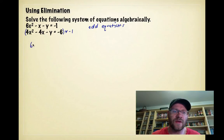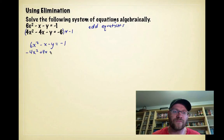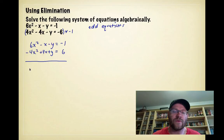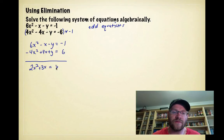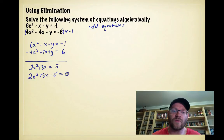The first equation stays as 6x² − x − y = −1. The second equation becomes −4x² + 4x + y = 6. Adding these two equations: 6x² − 4x² = 2x², −x + 4x = 3x, and −y + y = 0 — the y's cancel out, which is the whole point of elimination. −1 + 6 = 5. So we get a quadratic equation, and we move everything to one side to solve it.